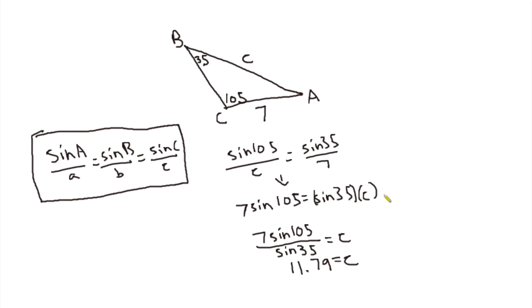And then, just more algebra, divide both sides by sine 35. And you get C equals 7 sine 105 divided by sine 35. Now this you can just plug into your calculator. These angles are in degrees, so make sure that your calculator is set in degrees and not radians. And when you plug it in, you get 11.79 equals C.